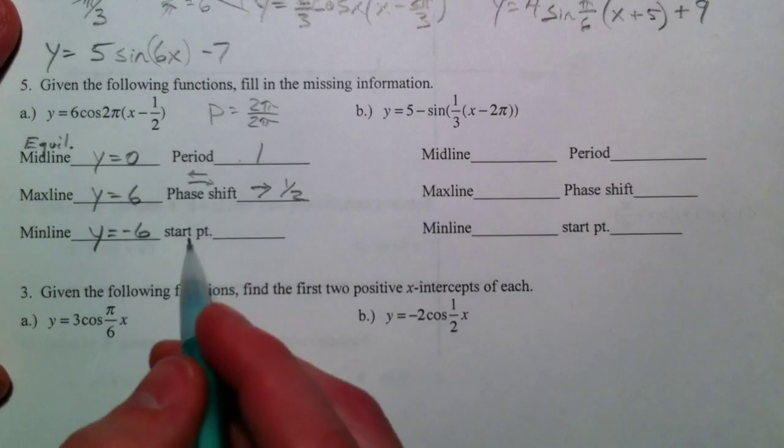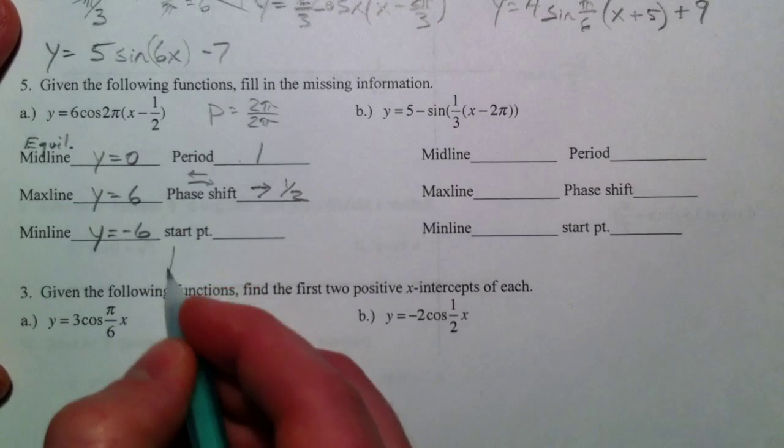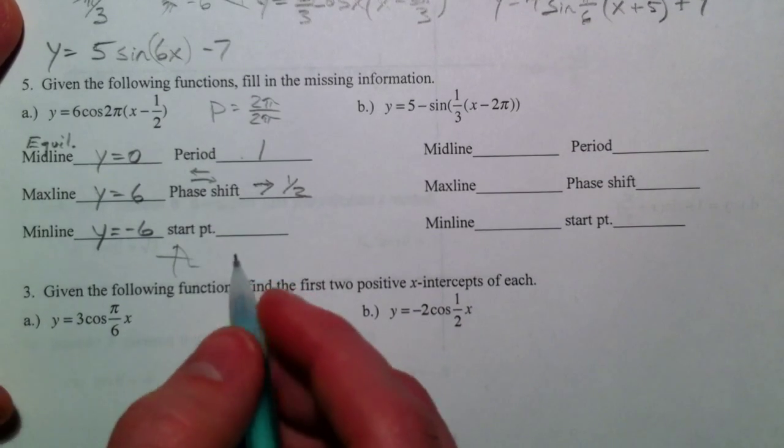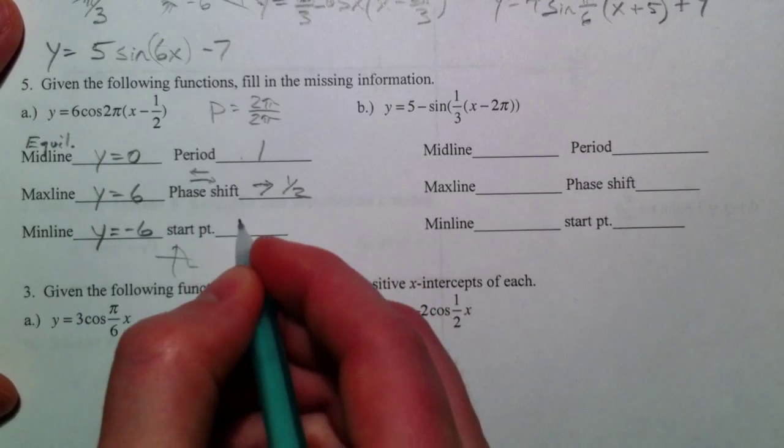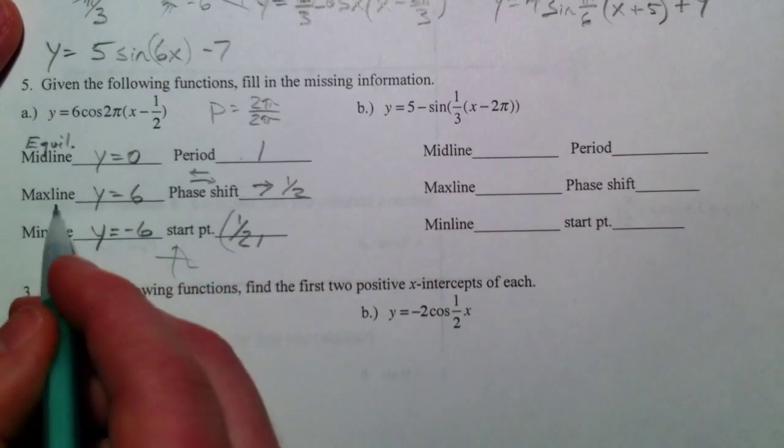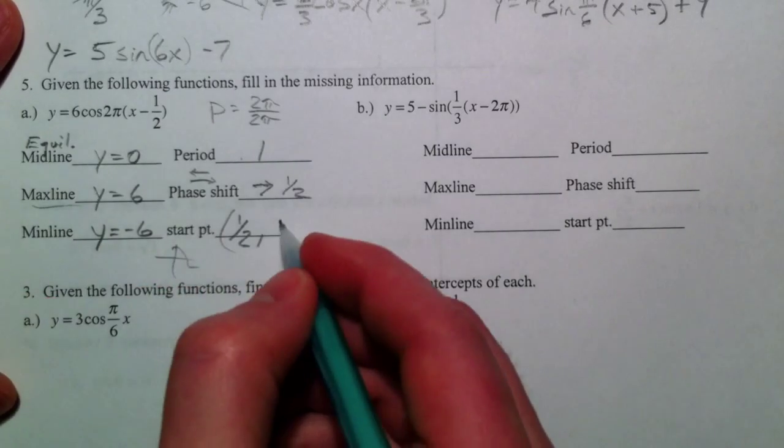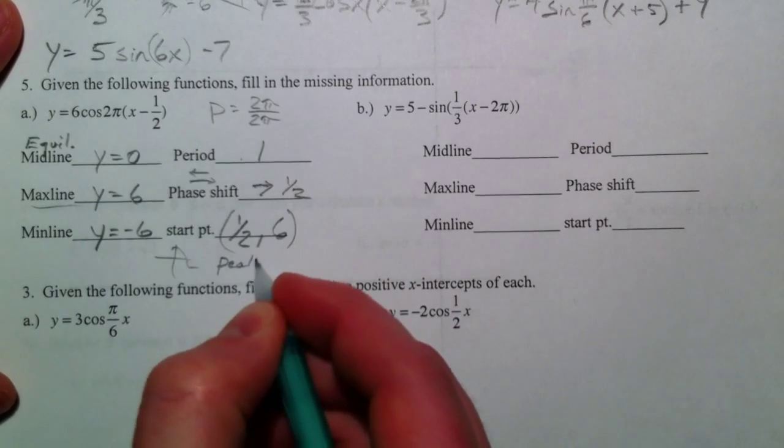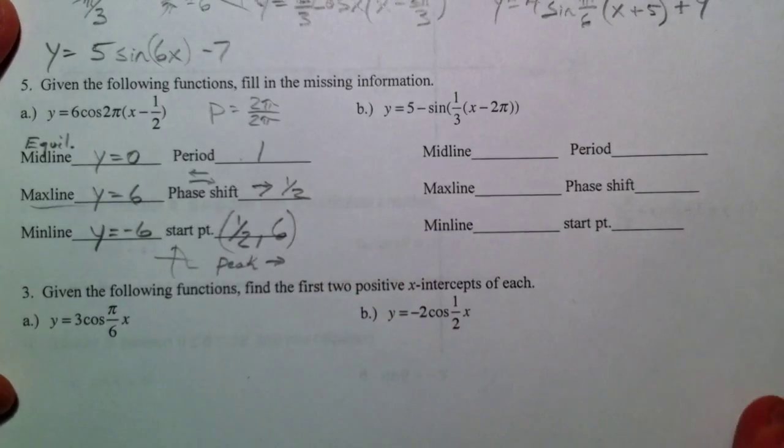And so, the starting point, because it's the cosine, it starts at the peak. But it moves to the right, 1 half. And so, the starting point is actually 1 half rather than 0. And since it starts at the peak, it starts at 6.